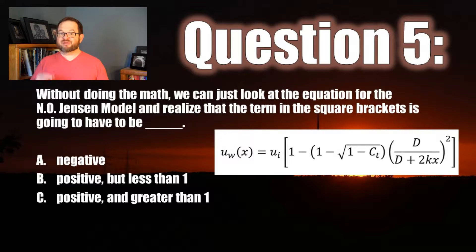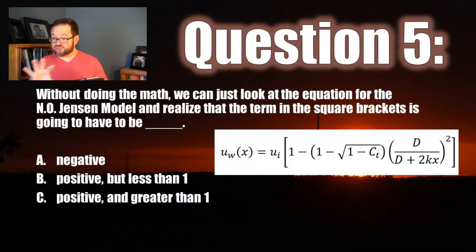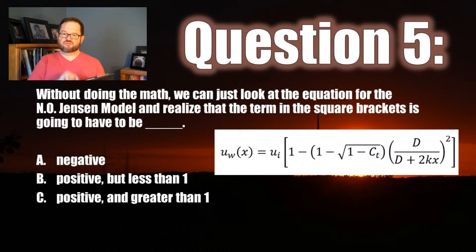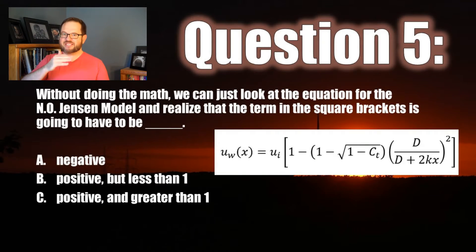I don't know if you guessed or if you figured it out, but it has to be b. Because uw is a fraction of ui, it has the same sign, so the term in the square brackets can't be negative. But it is a fraction of ui, so therefore that term in the square brackets is a number from 0 to 1 — a positive number, but smaller than 1.